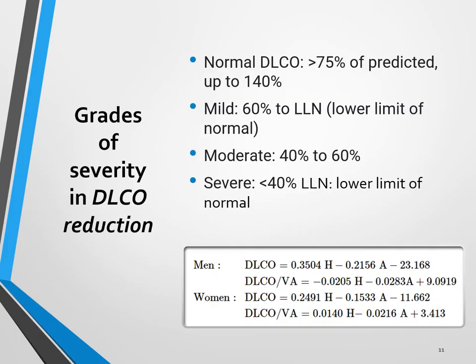This slide gives you an overview of the grades of severity of DLCO reduction. Normal DLCO is greater than 75% of predicted, up to 140% because you can have a greater value than 100 — based on conditions like obesity and asthma. Mild reduction is from 60% to the lower limits of normal. Moderate reduction is anywhere from 40% to 60%, and severe reduction is less than 40% of the lower limits of normal. These are how they classify the severity of your disorder.